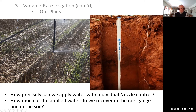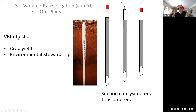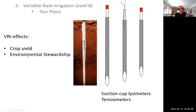We will measure how much of the applied water from one nozzle we recover in rain gauges on the soil surface and also in the soil, where we monitor soil water content at different depths down to three-foot depth. We are interested in variable rate irrigation effects on crop yields, but also environmental stewardship. At the lower end of the rooting depth, we install tensiometers and a suction probe to take soil solution samples and determine whether there is upward or downward directed water movement, and how well we can control that to reduce nitrate losses.